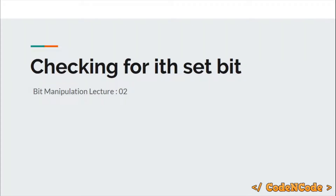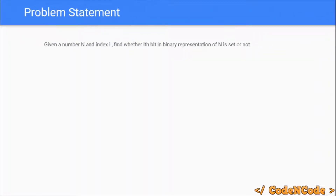Hello guys, this is CodeEncode and this is the second lecture of this bit manipulation series. In this lecture we are going to study how we can check whether the ith bit in the binary representation of a number is set or not. The problem is: you are given n, a number, and i, the index. You have to tell whether the ith bit in the binary representation of that number is set or not.